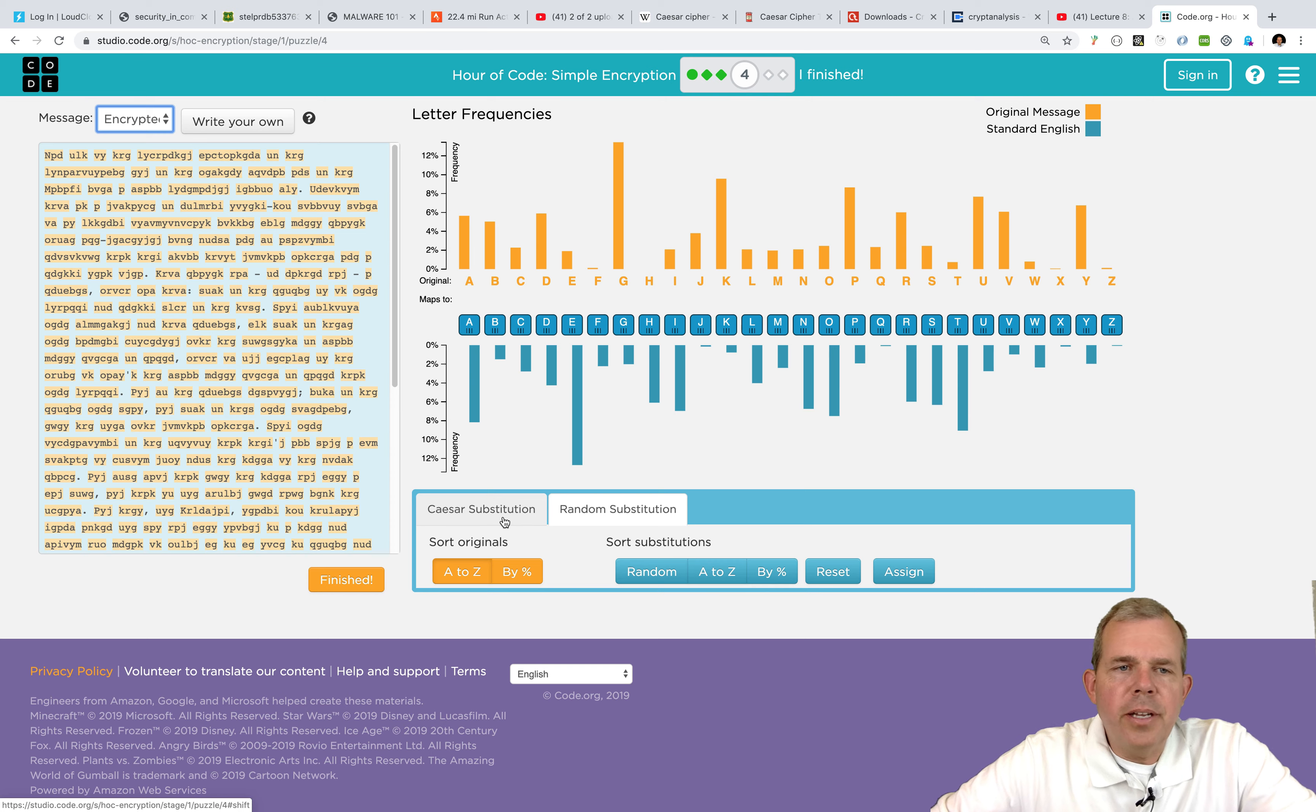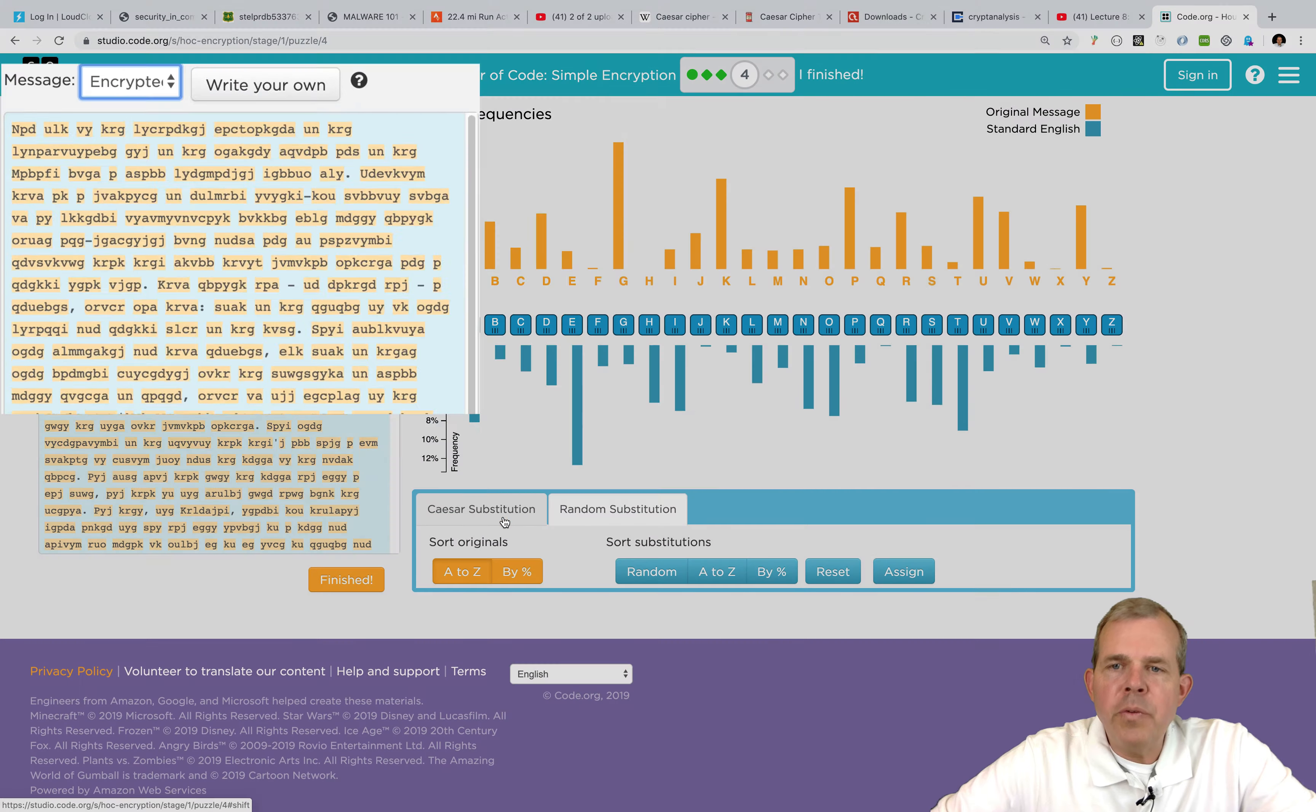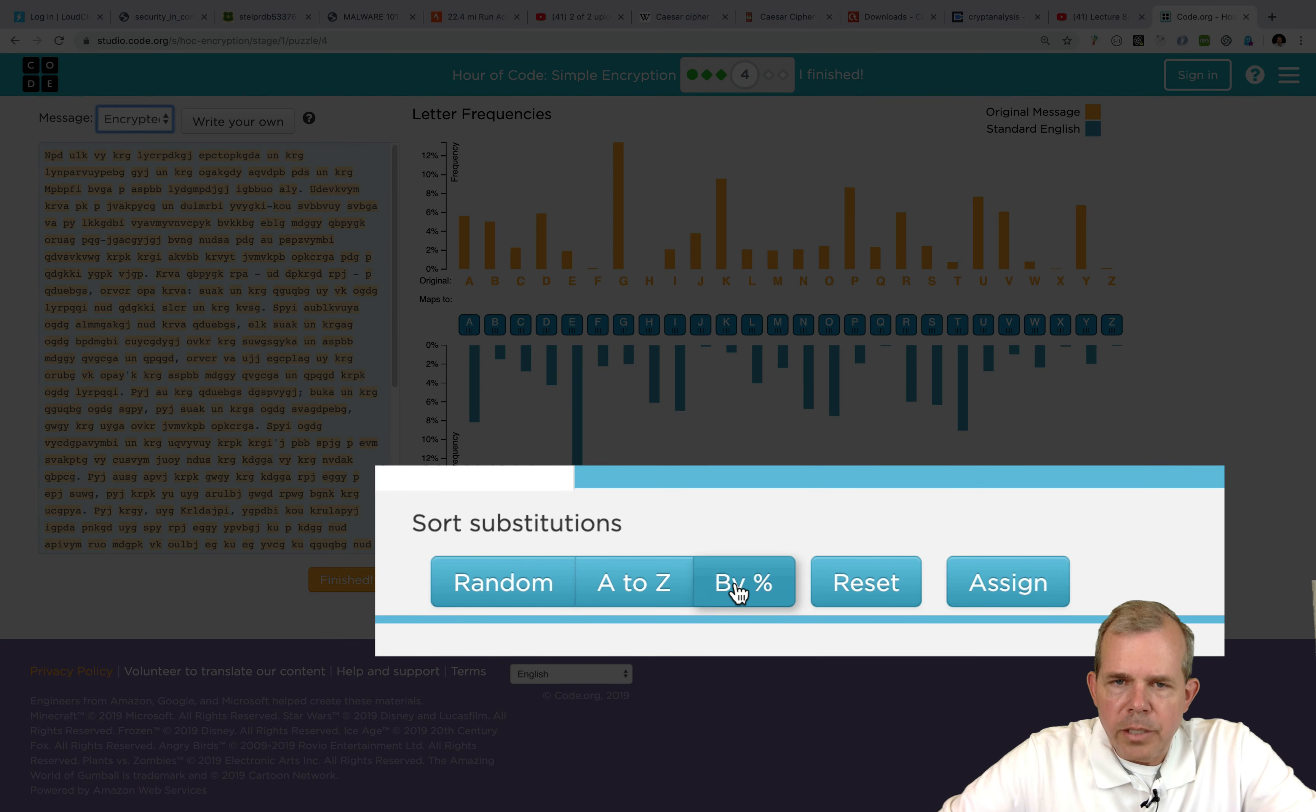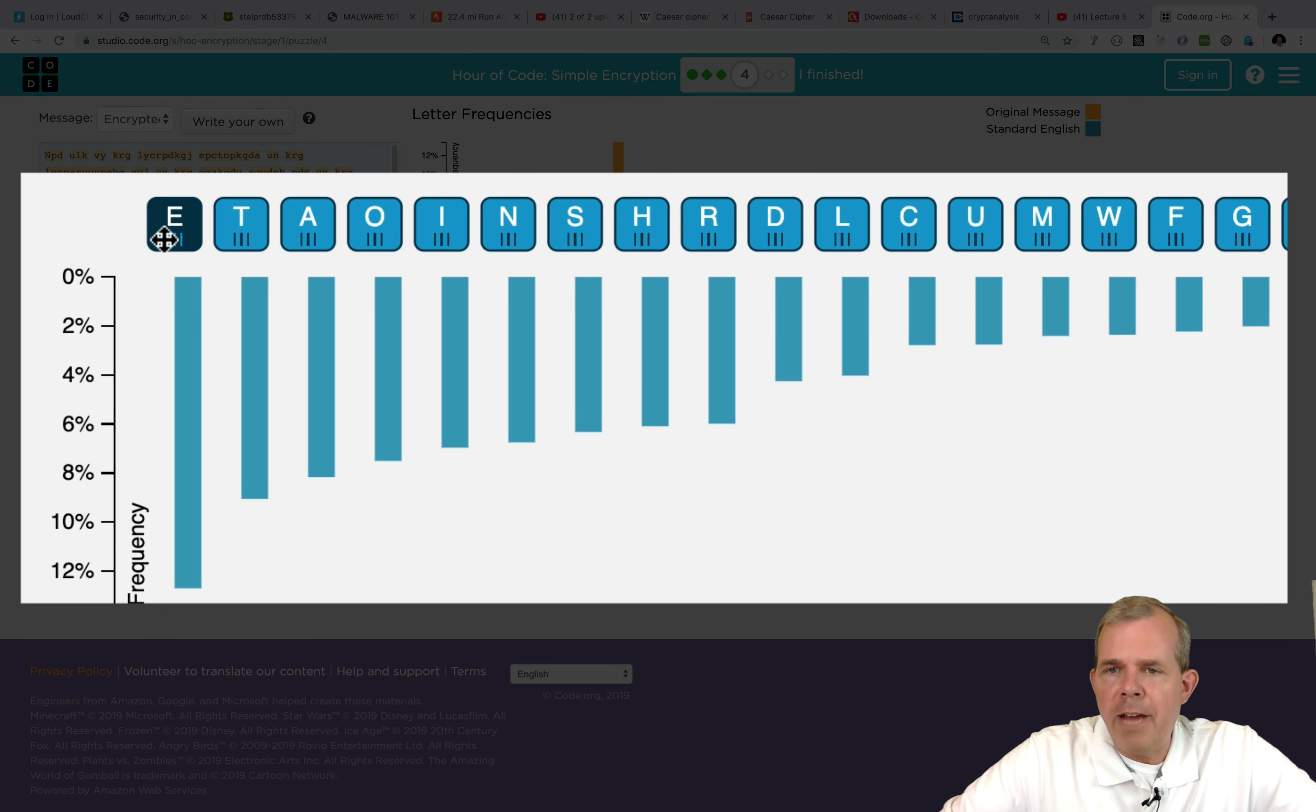A few pages on in their lesson, they give you a challenge. They say, here is a Caesar shifted message. Now see if you can crack the code. Well, it's been completely randomized. It's not just put in order from A to Z. We have a random substitution. So what you use then to crack such a code is what we would know about our language. Down here, we can sort by the percentages.